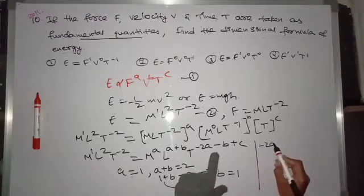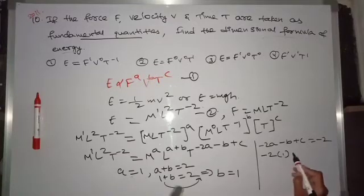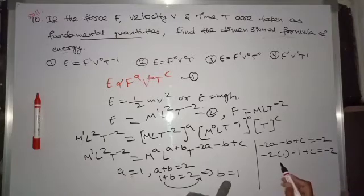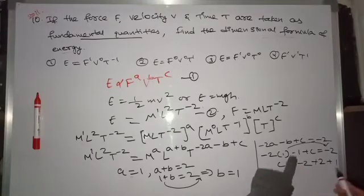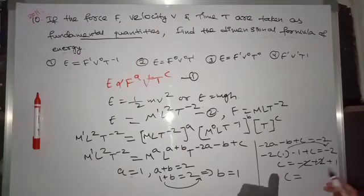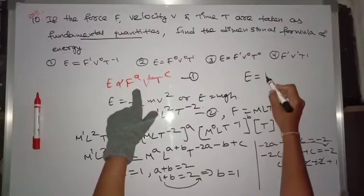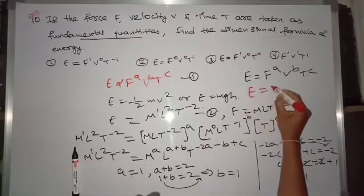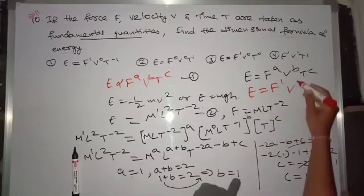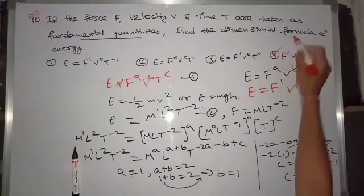For the powers of T: −2a − b + c = −2. With a = 1 and b = 1: −2 − 1 + c = −2, so c = −2 + 2 + 1 = 1. Therefore c = 1. So the dimensional formula for energy in terms of F, V, T is F¹V¹T¹. Option 4 is correct.